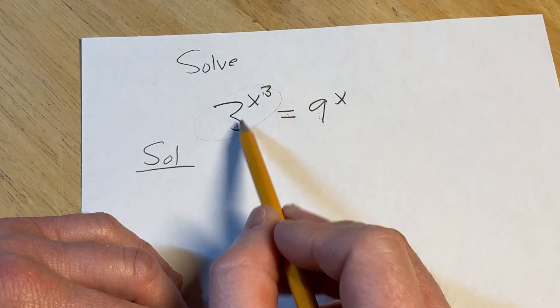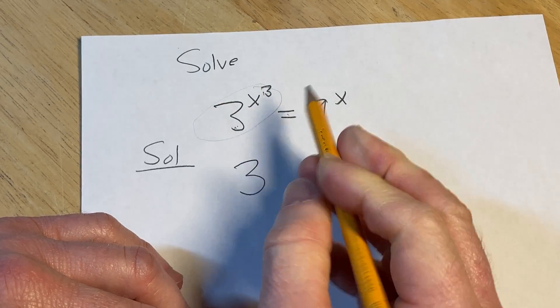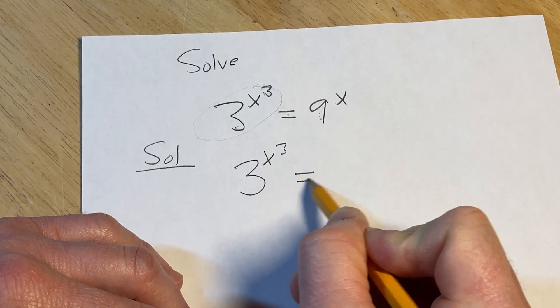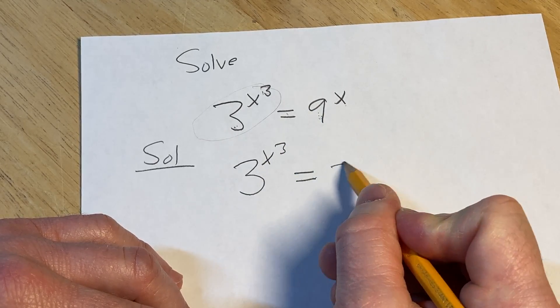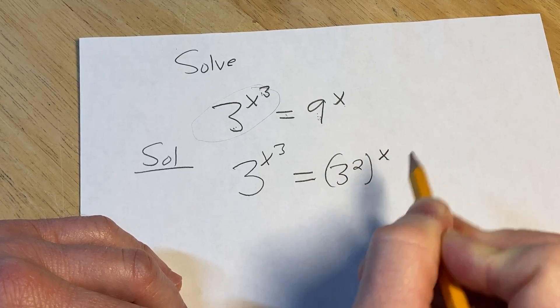So the first thing we'll do is just write this down again. So we have 3 to the x cubed is equal to, and here we have 9 to the x, so we can write the 9 as 3 squared, and this is to the x.